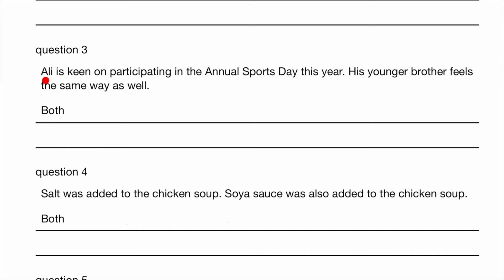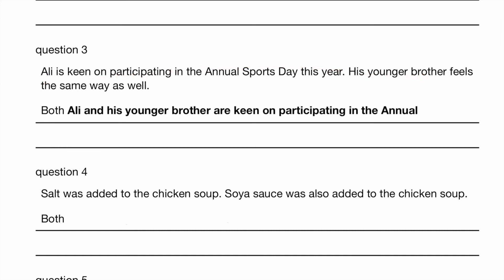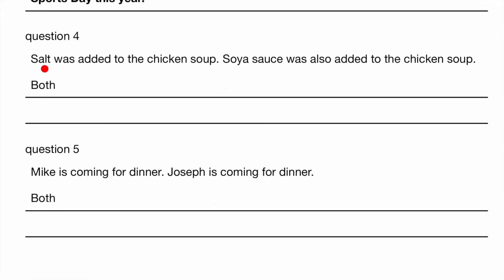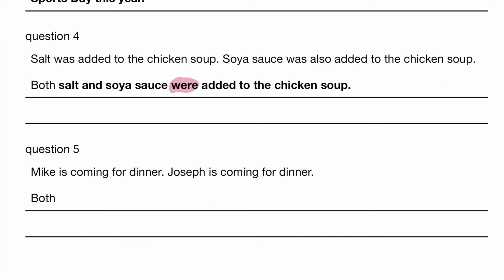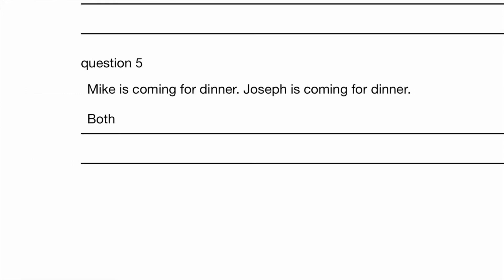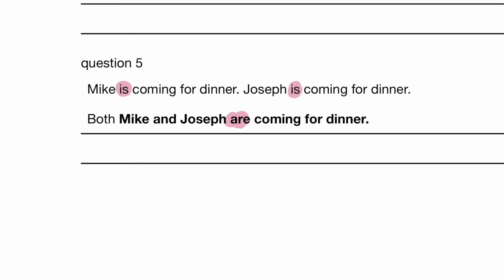Both Ali and his younger brother are keen on participating in the annual sports day this year — 'keen on' just means they are interested. Make sure you use the plural form 'are.' Both salt and soya sauce — both is plural, so no longer using 'was,' but 'were added to the chicken soup.' Here we are dealing with Mike and Joseph: both Mike and Joseph are coming for dinner. Keep it in the present tense, except we have gone from singular to a plural verb.